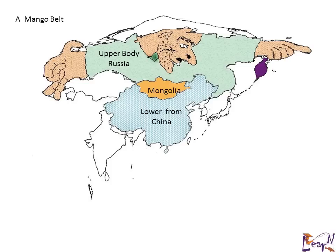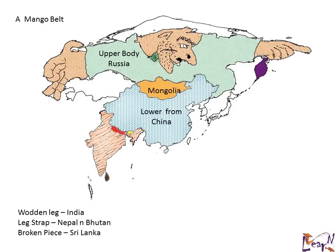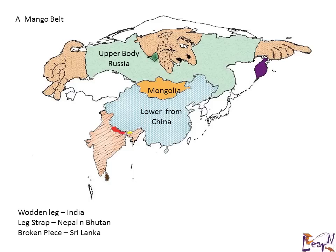Now the wooden stump. It shows you that the wooden leg is India. The leg strap is Nepal and Bhutan — Nepal in red and Bhutan in yellow. You may imagine that a part of the wooden stump has just clipped off, and that is Sri Lanka.